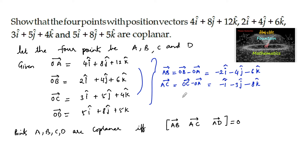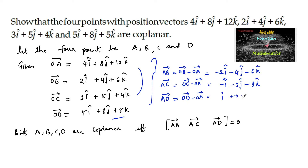And AD vector = OD − OA: 5 − 4 = 1 for i, 8 − 8 = 0 for j, and 5 − 12 = −7 for k. So AD = i + 0j − 7k.